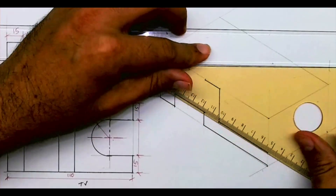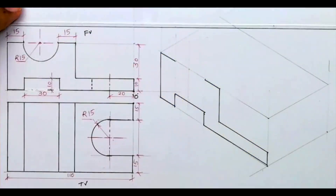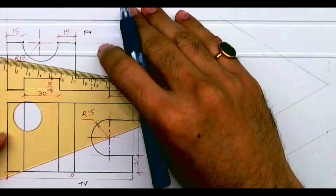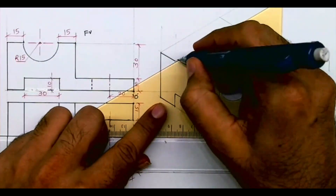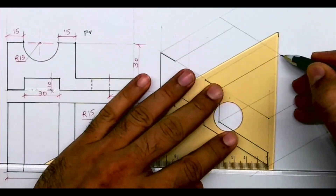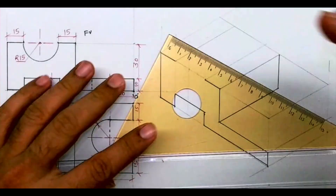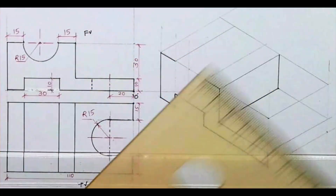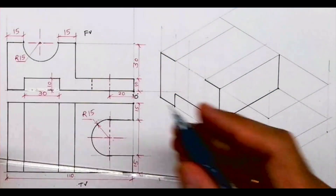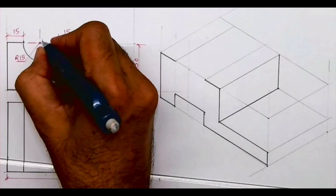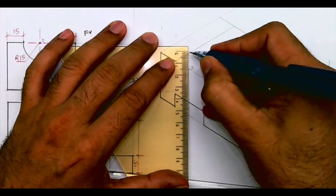Now whatever is there in the front, the same thing is behind — so take all points behind by 60. I have taken all the points behind by 60. Now we need to draw the circle. This is point O.